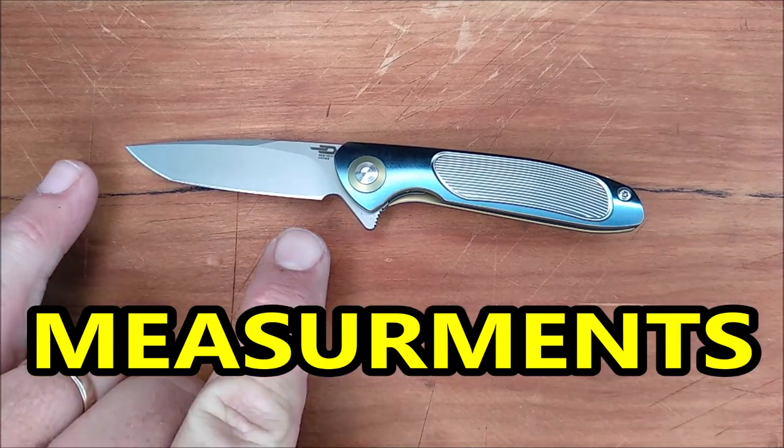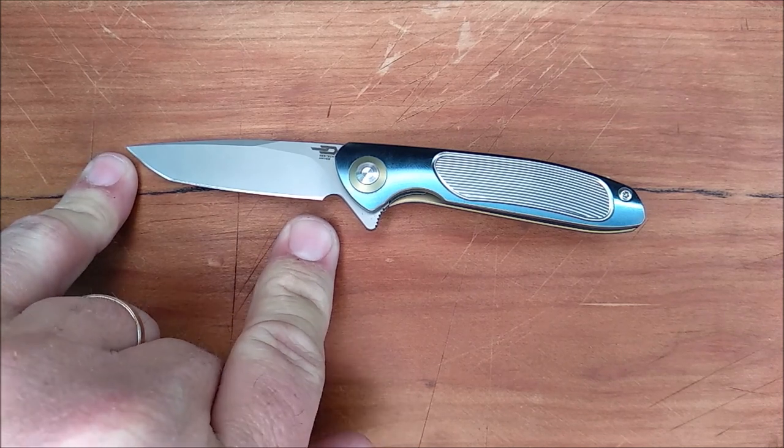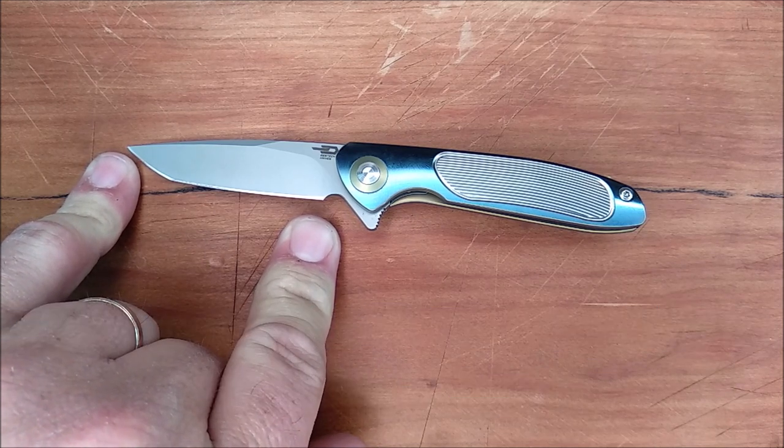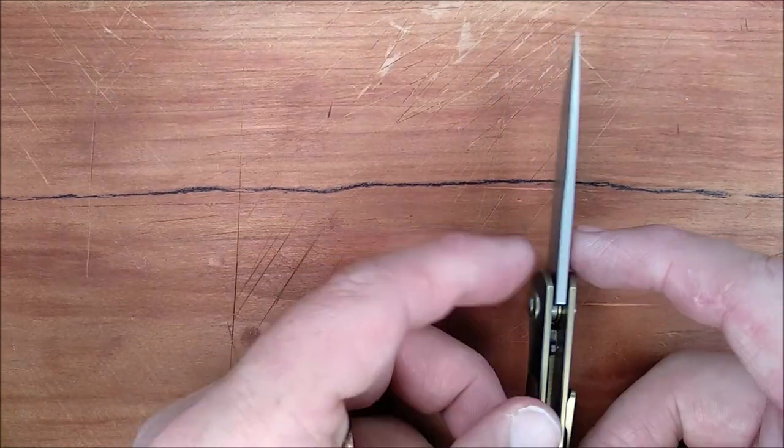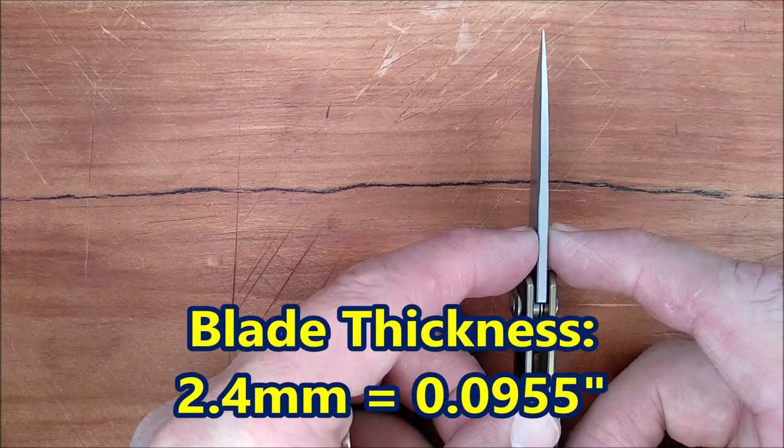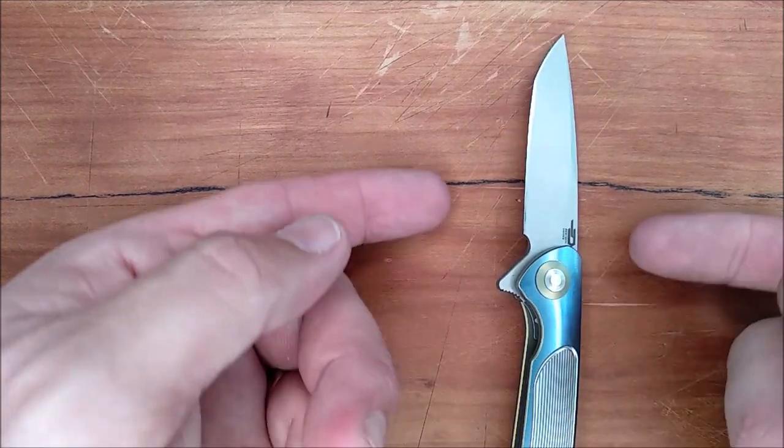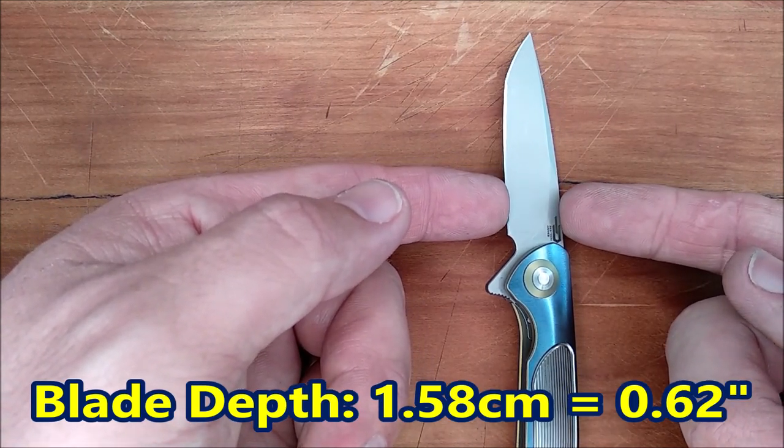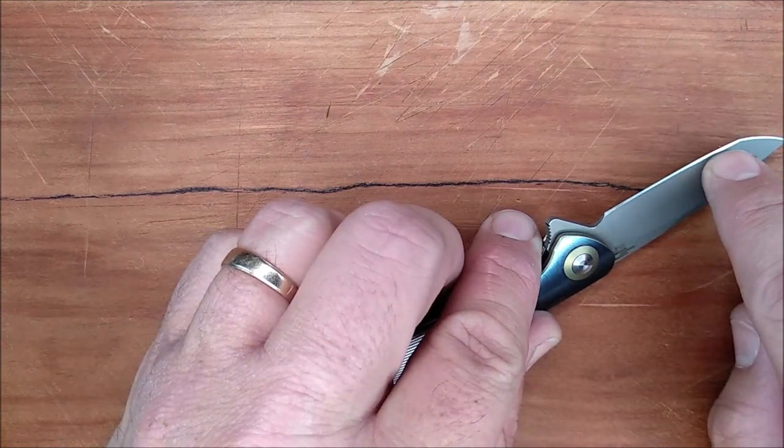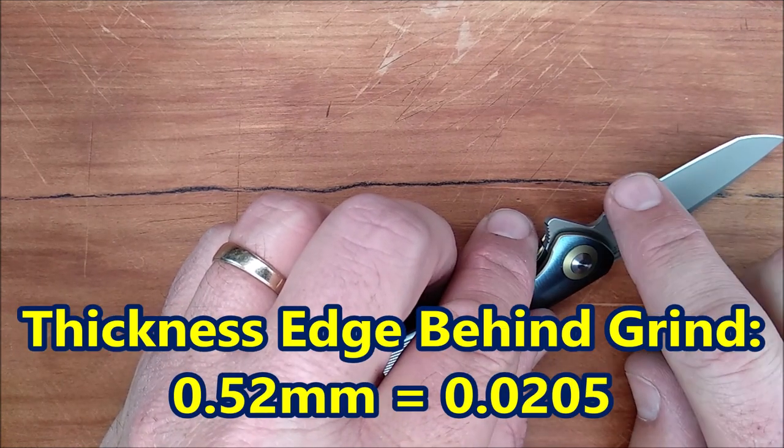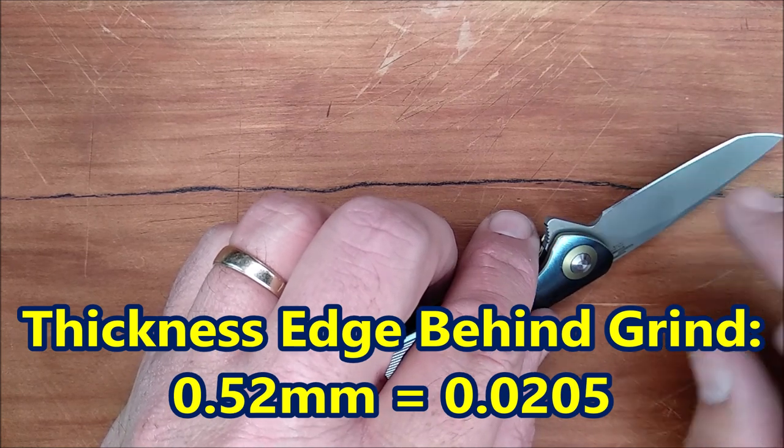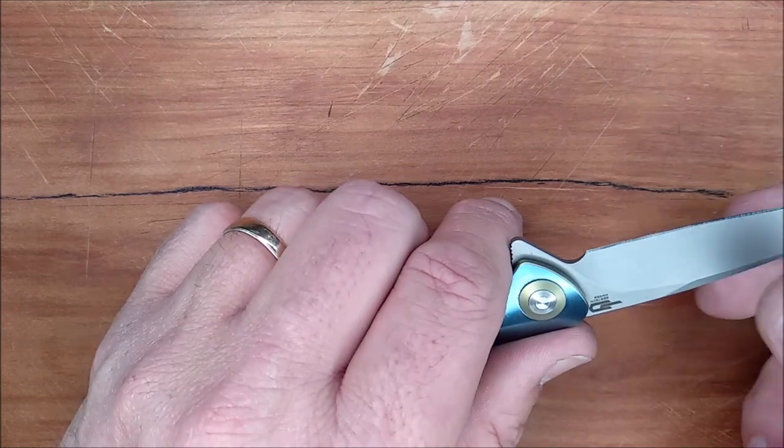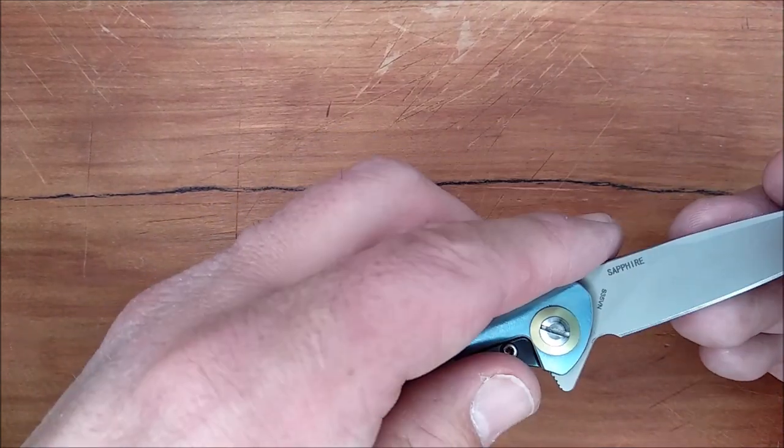Now the cutting edge and the blade length are the same. That's 5.75 centimeters, 2.26 inches. The blade thickness is 2.4 millimeters, 0.0955 inches. The blade depth is 1.58 centimeters, 0.62 inches. The thickness of the edge just behind the grind right there is 0.52 millimeters, 0.0205 inches. Perfect thickness behind the grind there. This steel could stand it to be thinner as well, but hey, it's great the way it is.